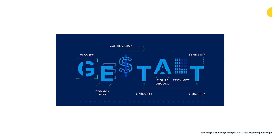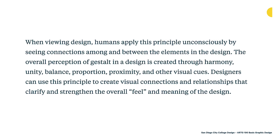Symmetry is another Gestalt concept that gives a harmonious feeling — it has order and organization, and our brains tend to prefer it, although sometimes that's not the best way to communicate an idea. When viewing design, humans apply Gestalt principles unconsciously by seeing connections among and between elements. The overall perception of Gestalt in a design is created through harmony, unity, balance, proportion, proximity, and other visual cues. Designers can use this principle to create visual connections and relationships that clarify and strengthen the overall feel and meaning of the design. Gestalt theory runs through almost everything we do because it's inherent in the way our brains perceive the visual world.